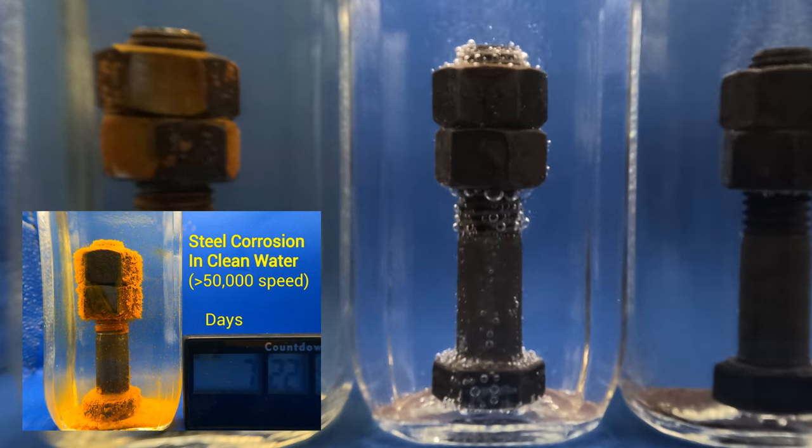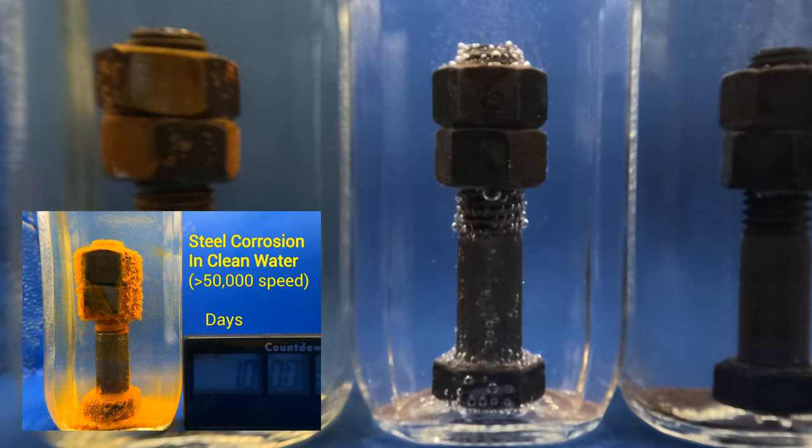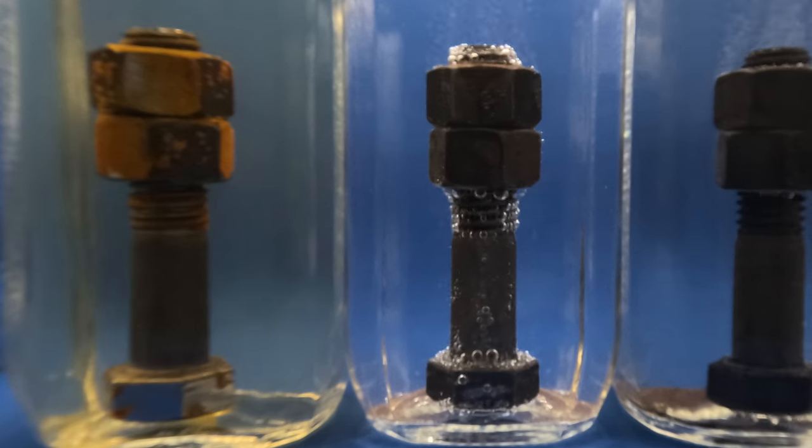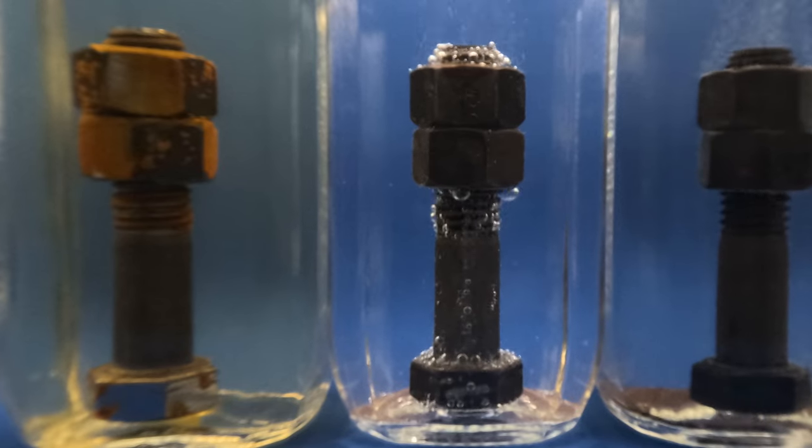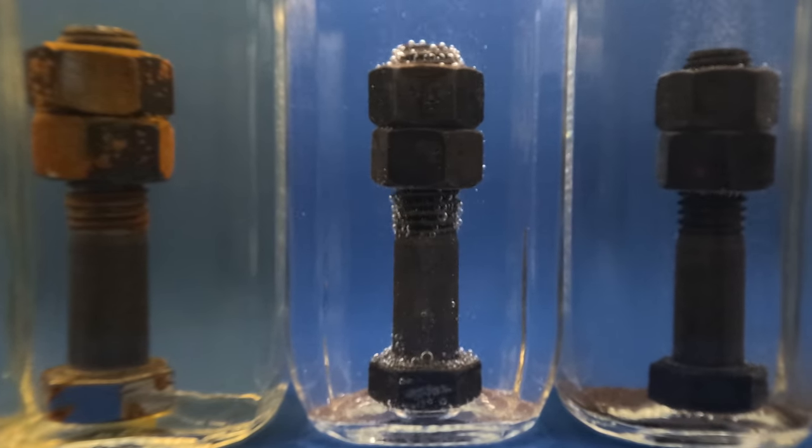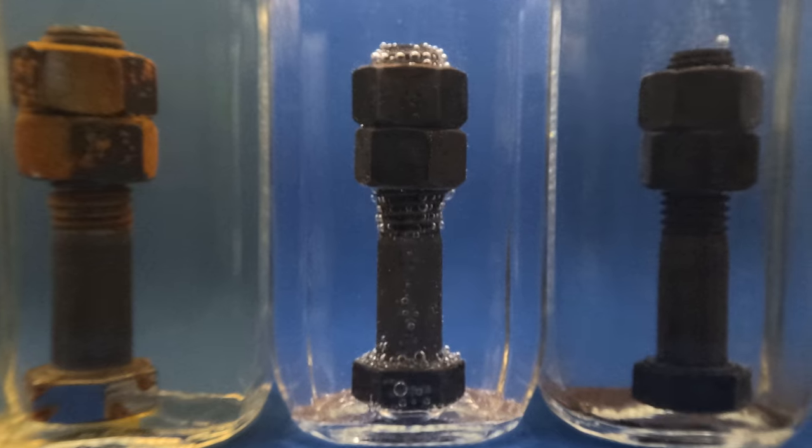Unlike corrosion in clean water, which slowly forms rust, and that rust slows down the rate of corrosion, acid never stops. Acid dissolves away the metal and constantly exposes fresh metal. As long as that acid has oomph, it's going to continue to damage the steel.